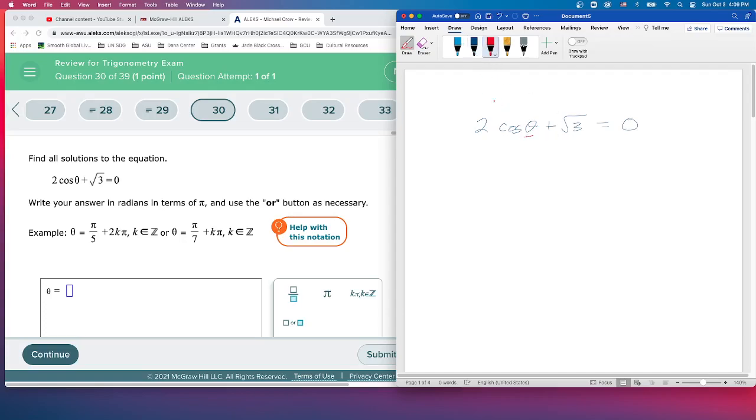We move everything else to the other side with algebra. We're going to subtract square root of 3 from both sides. So it gives us 2 cosine θ equals negative square root of 3.